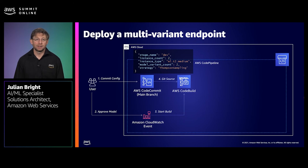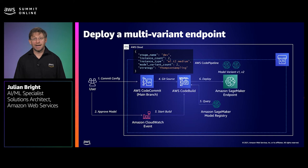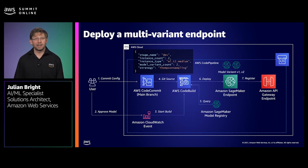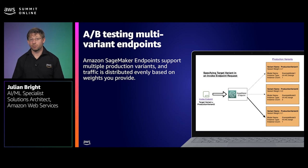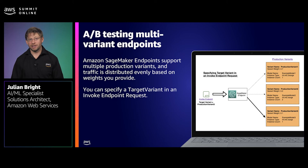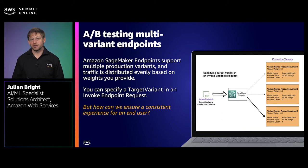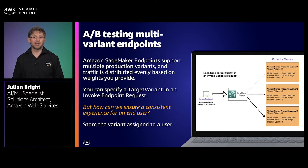You can evaluate model performance on a validation set and see those metrics and logs directly within Amazon SageMaker Studio. Once you're ready to deploy that model, you can update the status to approved and it's ready for deployment. For our A-B testing pipeline, we have created a custom MLOps template for a multi-variant endpoint deployment. The user starts by committing a config file to our git repository which tells the AWS CodeBuild job how many variants we want to deploy. When the new model is approved, the AWS CodeBuild job queries the model registry to get the latest model versions and constructs an AWS CloudFormation template using CDK for the next stage, which is to deploy the multi-variant endpoint. Amazon SageMaker endpoint supports multi-production variants and traffic is distributed based on the weights that you provide. You can also specify a target variant in the invoke endpoint request to return predictions from a specific model variant. But if a model variant returns different predictions, we need to store the specific model variant assigned to a user to ensure a consistent experience.